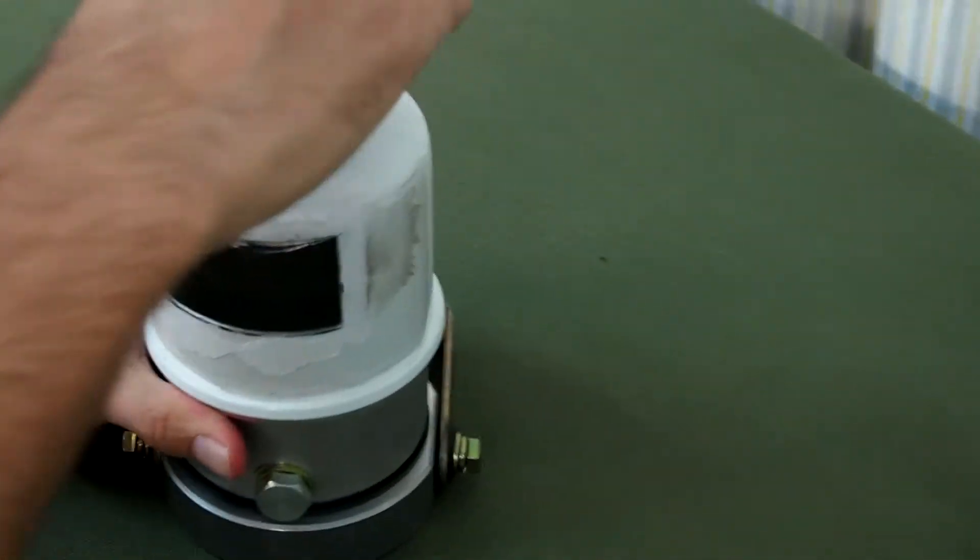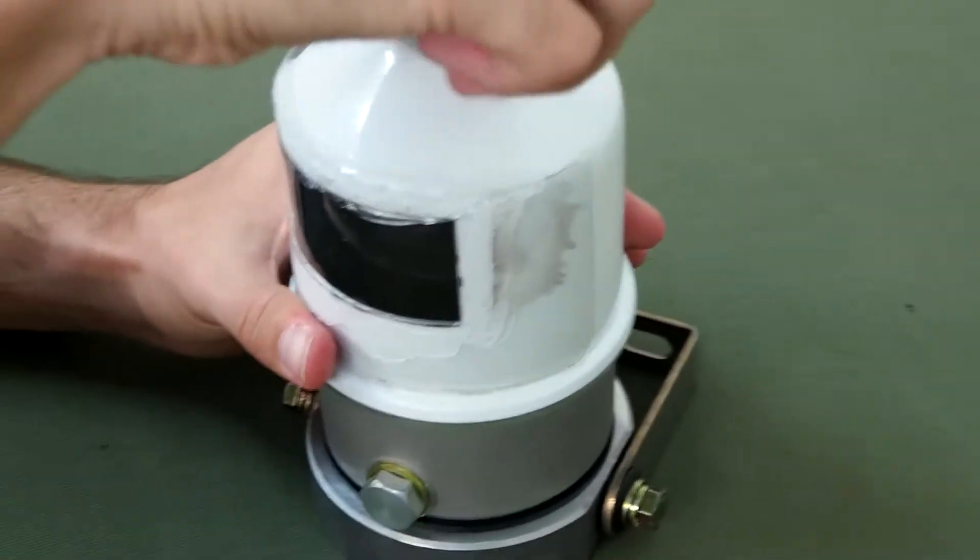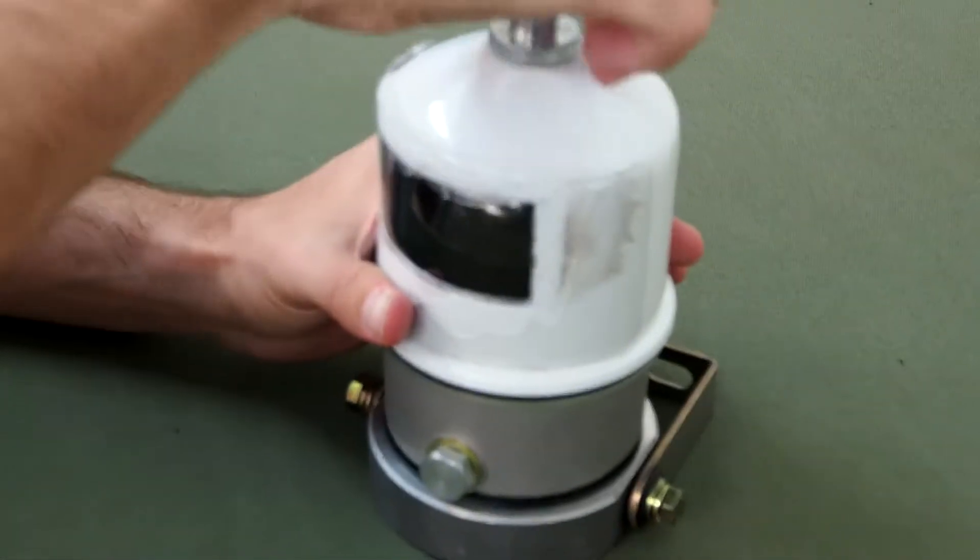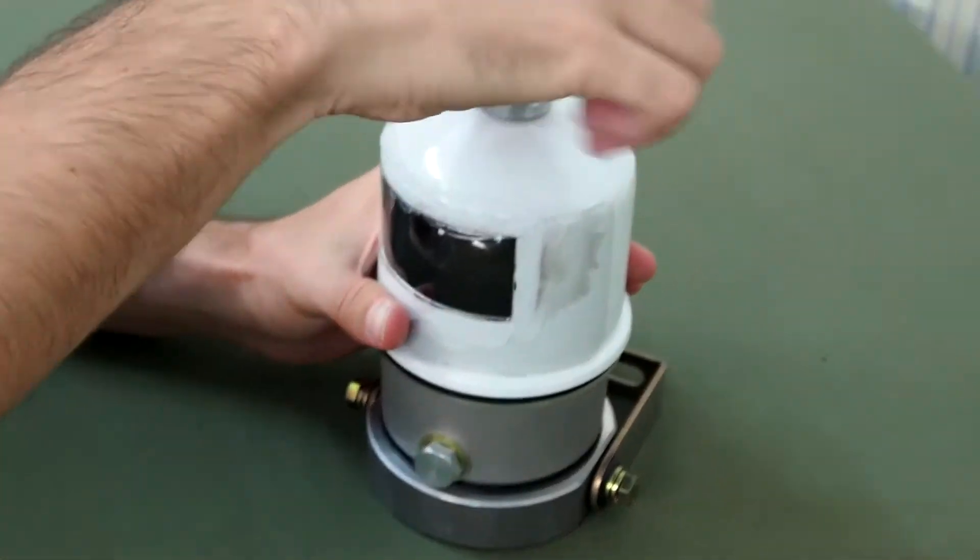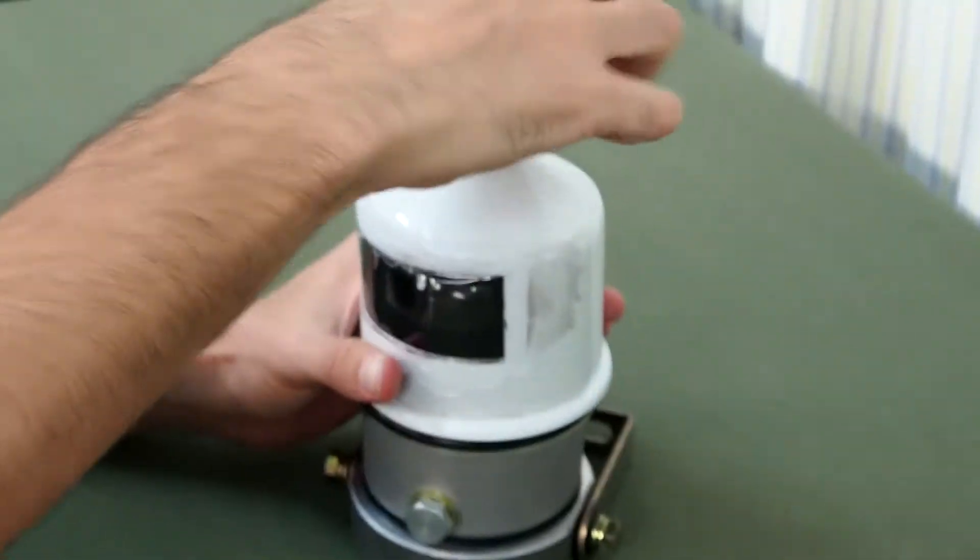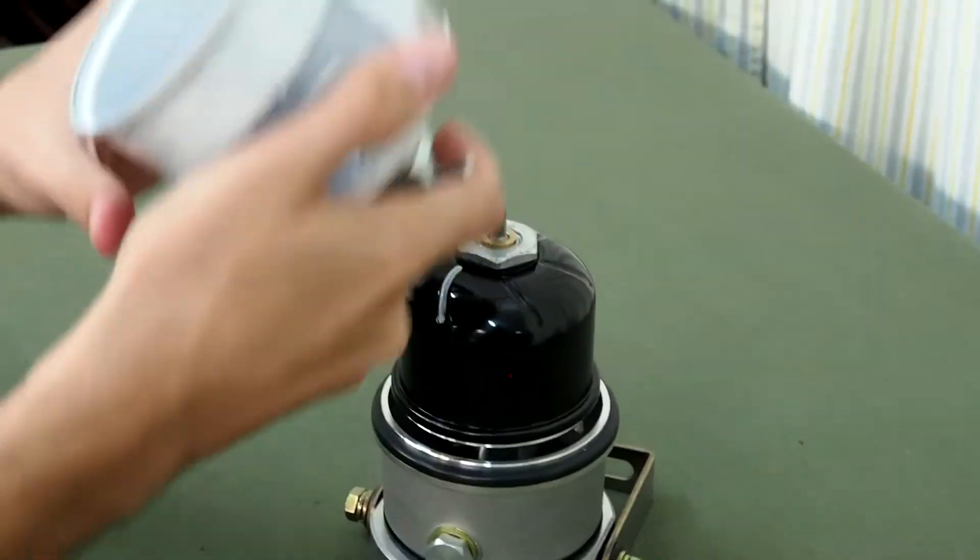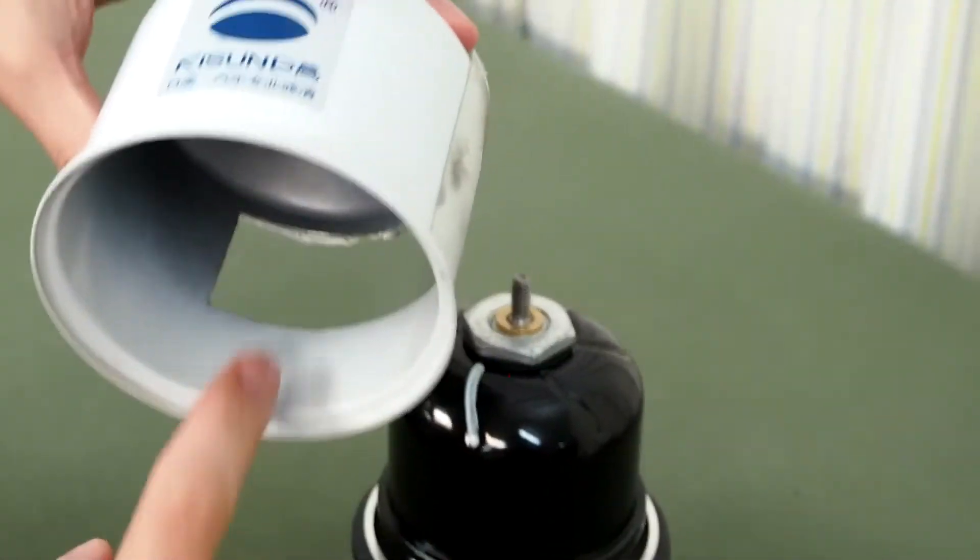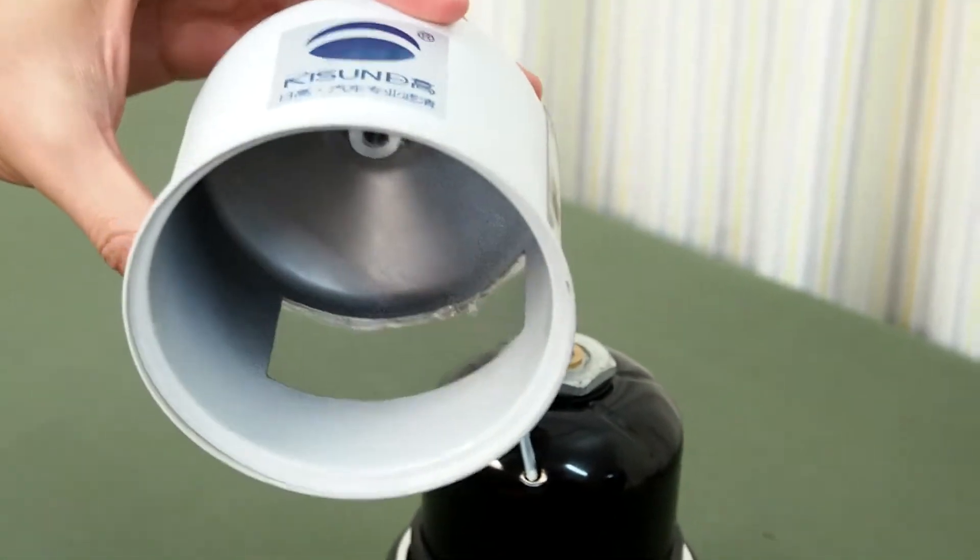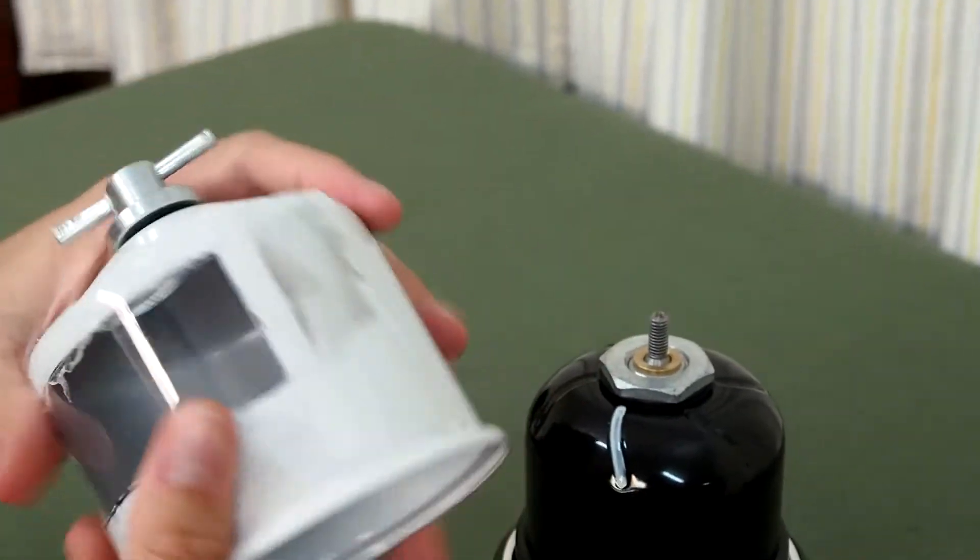Alright, so just dismantle the centrifuge here. Simply unscrew this like so. Okay, just see, there's the little window in there. Like that. I'll just put that down.